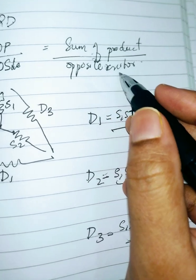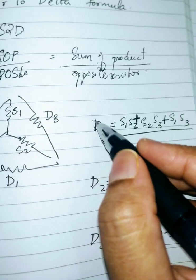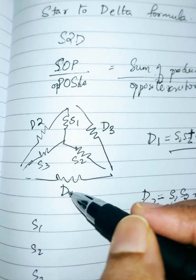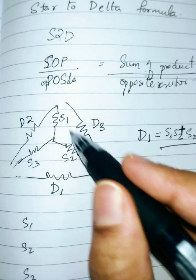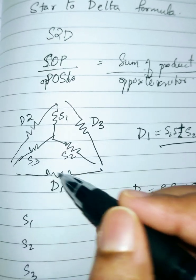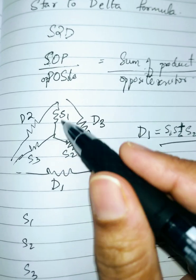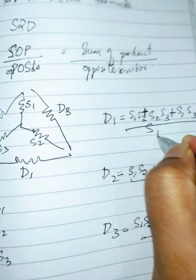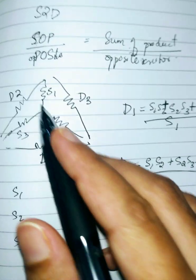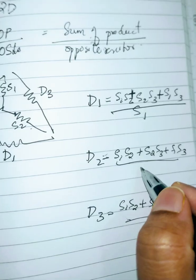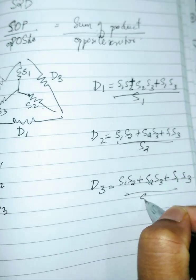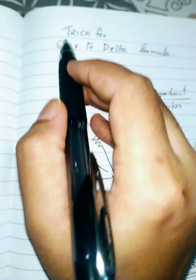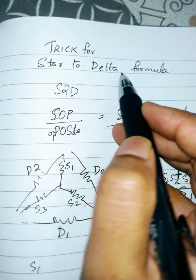Divide the sum of products by the opposite resistor. To get D1, the opposite resistor is S1; to get D2, divide by S2; and to get D3, divide by S3. That is all you need to memorize the star-to-delta formula.